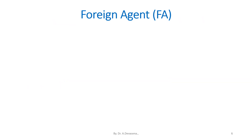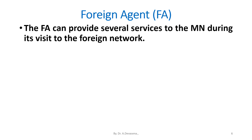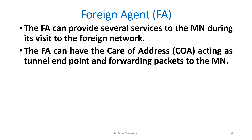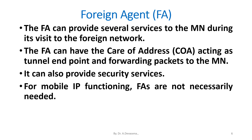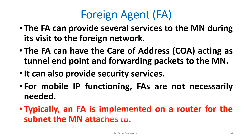Foreign agent (FA): The FA can provide several services to the mobile node MN during its visit to the foreign network. The FA can have the care of address COA, acting as tunnel endpoint and forwarding packets to the MN. It can also provide security services. For mobile IP functioning, FAs are not necessarily needed. Typically, an FA is implemented on a router for the subnet the MN attaches to.